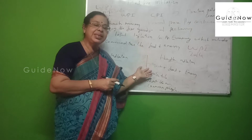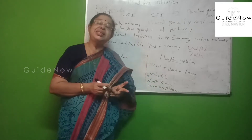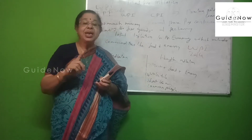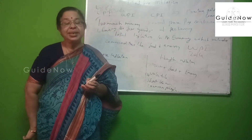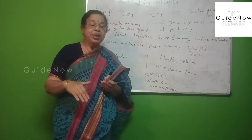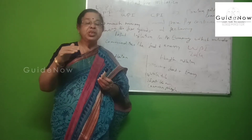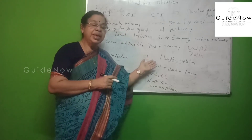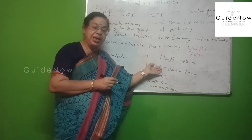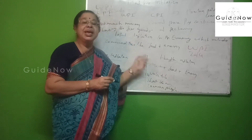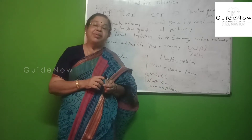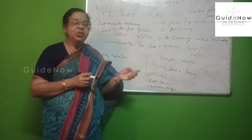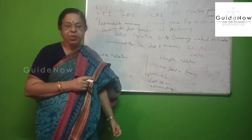Wholesale price index and consumer price index — these are the two important ways to calculate inflation. Wholesale price index is based on the price at the producer level, and consumer price index is based on the price at the consumer level. These are the two important ways.